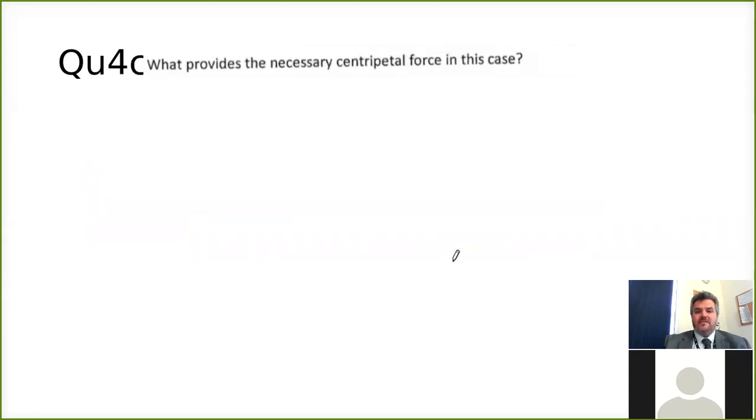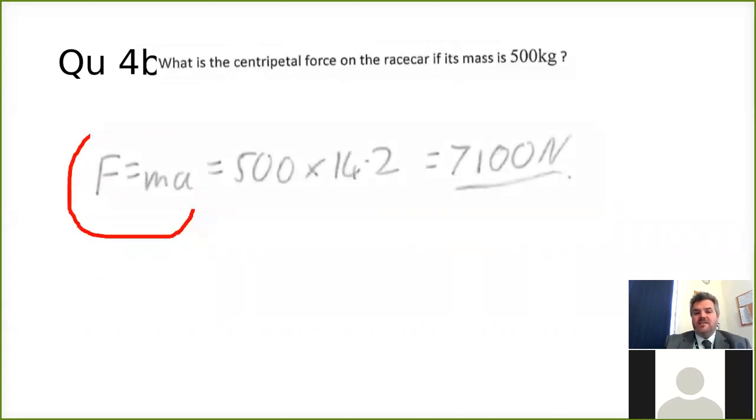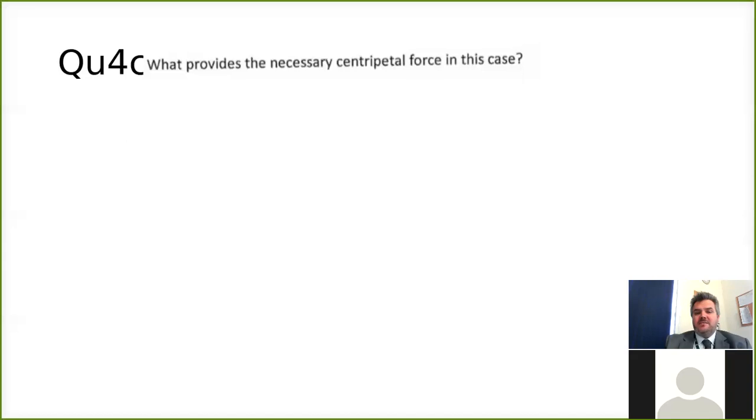So what provides centripetal force? Well, the question is about a racing car. So a racing car is going around in a circle. What's actually pushing it around in a circle is actually going to be the force of friction between the tires and the road. If you think about it, if that force of friction isn't enough to make it go around in a circle, the car will just skid. The car will just want to go in a straight line instead, which is what happens when people go around corners too fast.